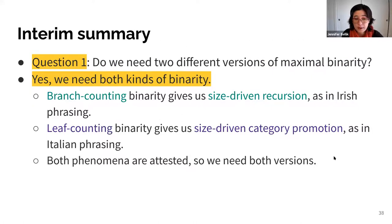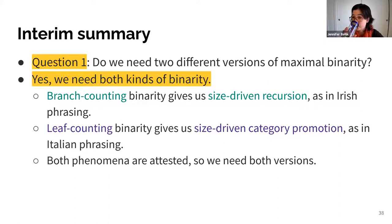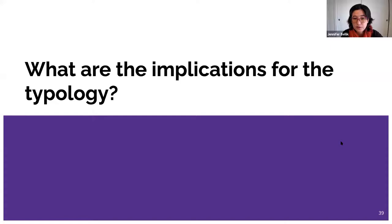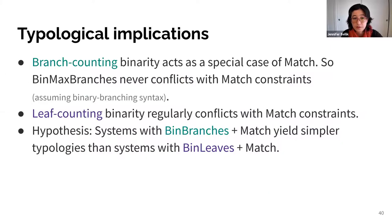Let's take stock. Do we really need two different versions of maximal binarity? Yes, we do. Branch counting binarity gives size-driven recursion, as in the Irish example, and leaf counting binarity gives size-driven category promotion, as in Italian. Both phenomena are attested, so we need both versions of the constraint. We can move on to the second question: what are the implications for the predicted typology? Branch counting binarity acts as a special case of match — bin-max-branches never conflicts with match constraints — whereas leaf counting binarity always conflicts with match constraints.